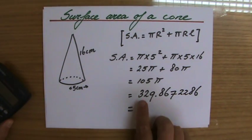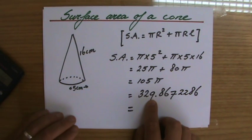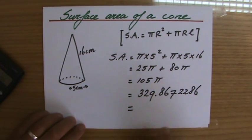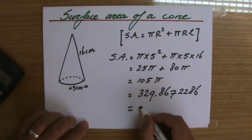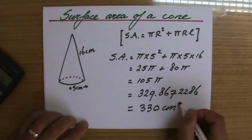Three significant figures. The 9 stays a 9 or goes up to 10. That depends on the next digit, goes up to 10. So careful now. So it's 330 centimeters squared.